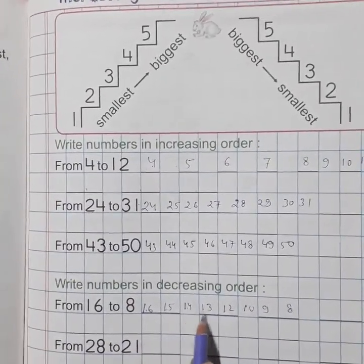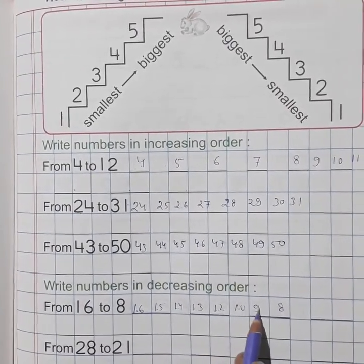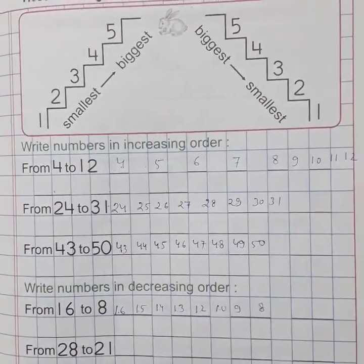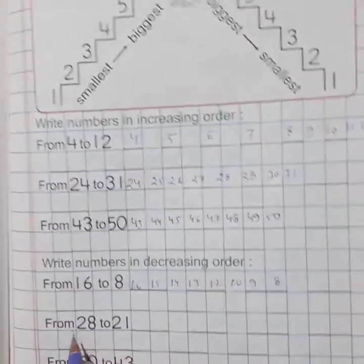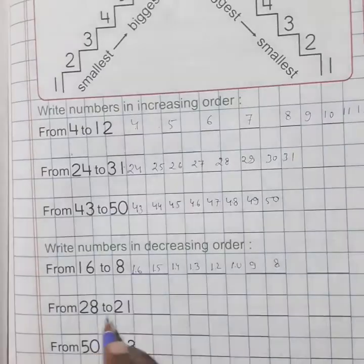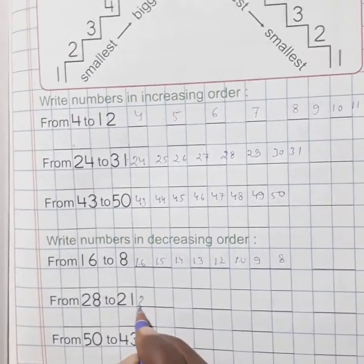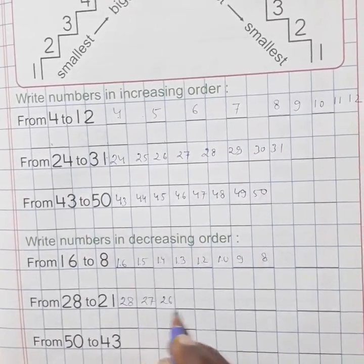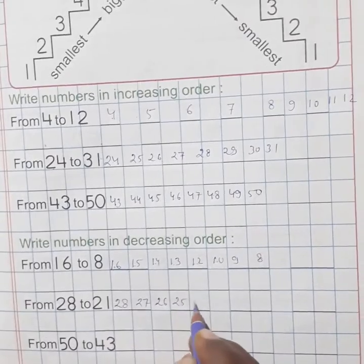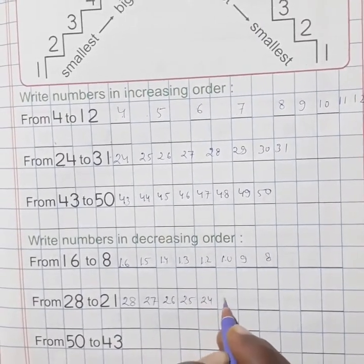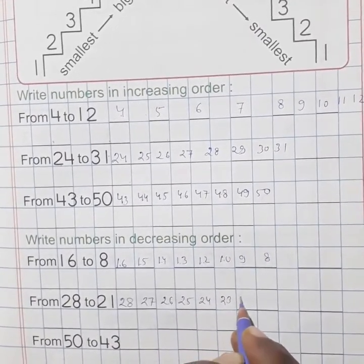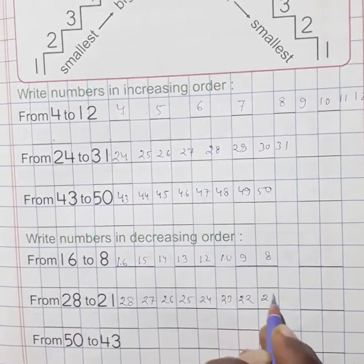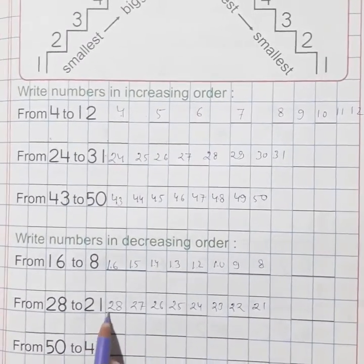Next question, here 28 to 21. Now write this type: 28, 27, 26, 25, 24, 23, 22, and 21. Write this type: 28, 27, 26, 25, 24, 23, 22, and 21.